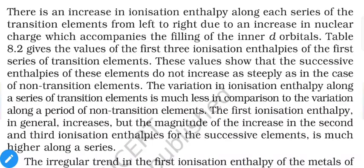Table 8.2 gives the values of the first three ionization enthalpies of the first series of transition elements. These values show that the successive ionization enthalpies of these elements do not increase as steeply as in the case of non-transition elements — the difference is comparatively larger for non-transition elements but comparatively lower for transition metals.